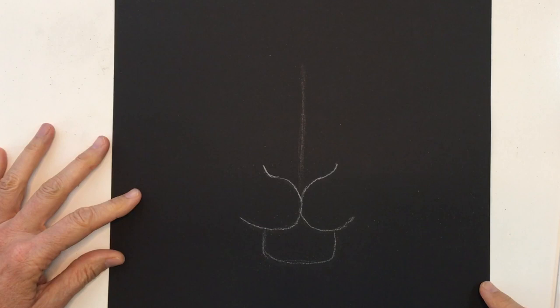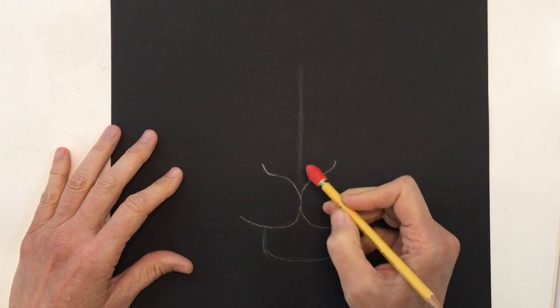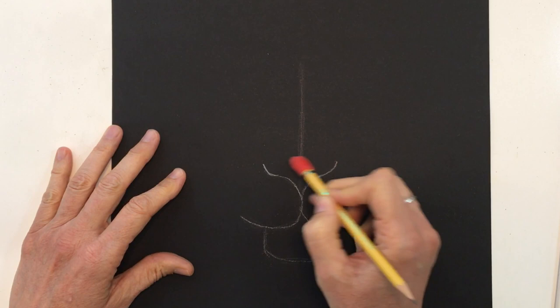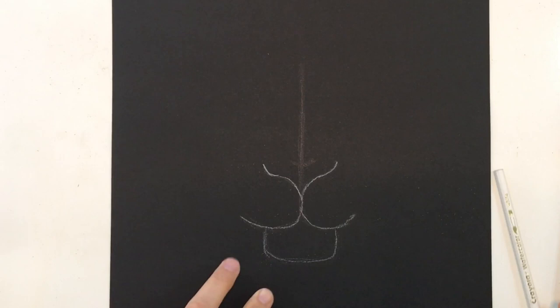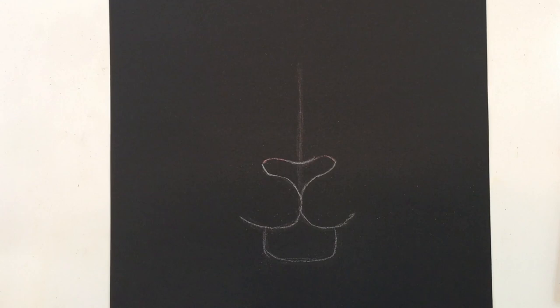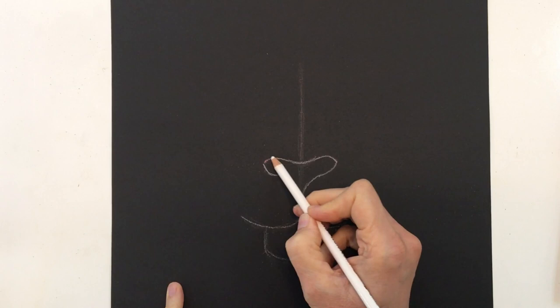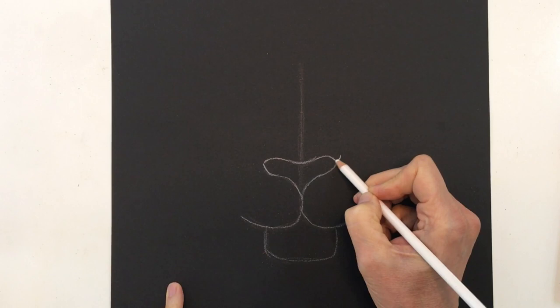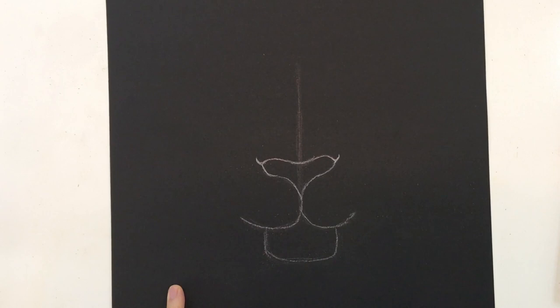Now finish the nose. Come to the bottom of the V, come up a little ways, and make a small bowl shape — symmetrical on both sides. Then make a little hill shape above the bowl. Finally, at the bottom of the hill, do a slight little curve up and that gives you a lion's nose.